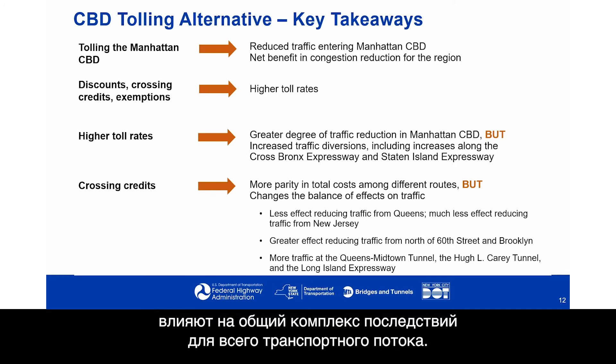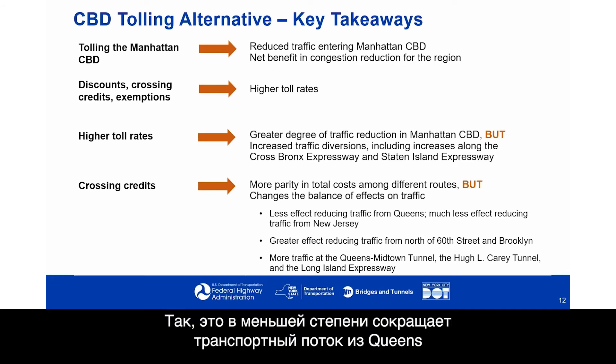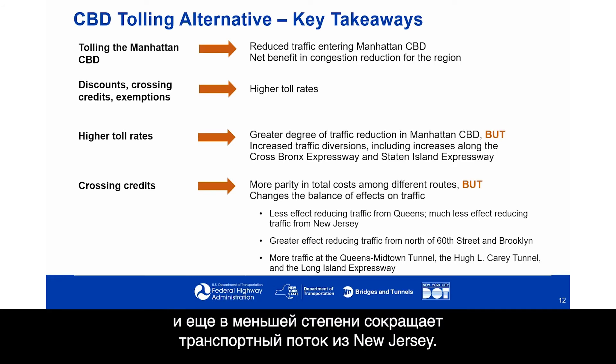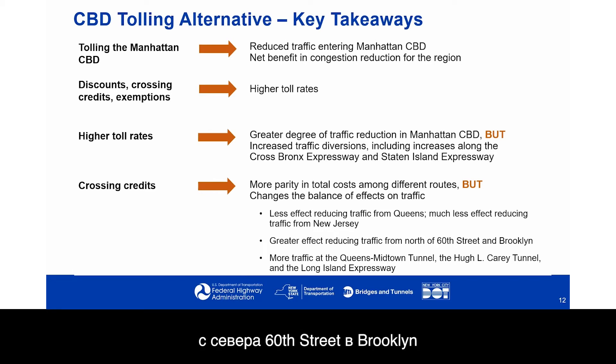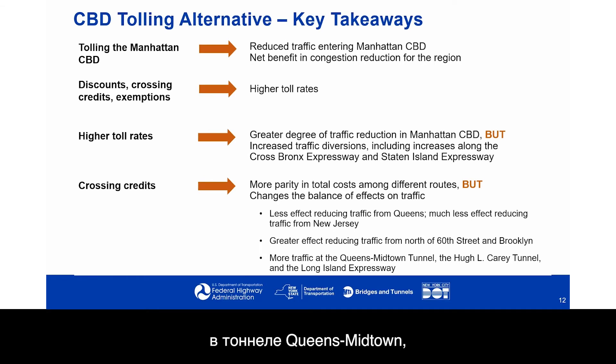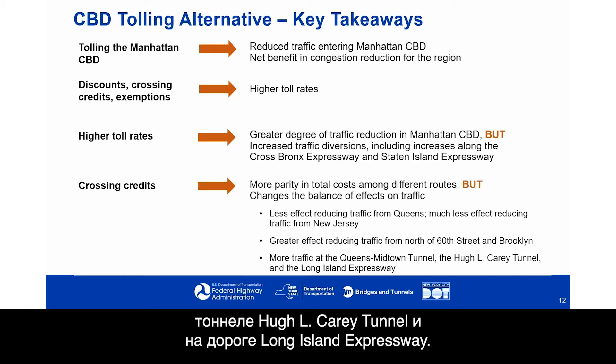Crossing credits change the balance of effects on traffic: they result in less effect reducing traffic from Queens and much less effect reducing traffic from New Jersey. They result in greater effects reducing traffic from north of 60th Street and Brooklyn, and result in more traffic at the Queens Midtown Tunnel, the Hugh L. Carey Tunnel, and the Long Island Expressway.